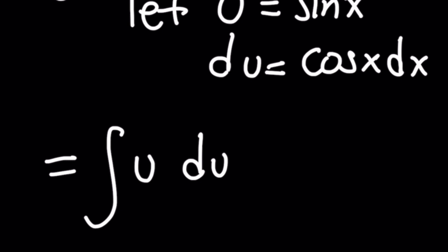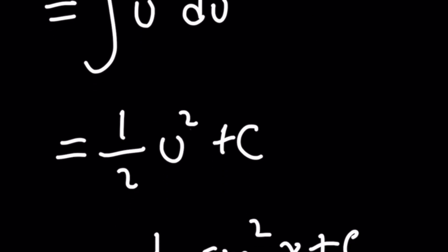And that's a simple answer, one half u squared plus C, right? Well, don't forget to also put back in your original variable x. We can't just say the answer is one half u squared plus C. Because I didn't give you a problem with u as the variable, I gave you a problem with x.